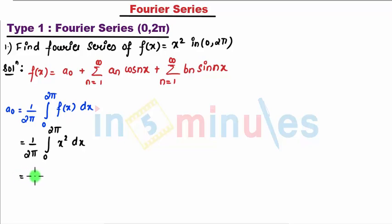So integrating that gets to be x³ by 3, my upper limit is 2π, lower limit is 0, which comes to be 1 upon 2π, 1 upon 3, and 8π³ where I can cancel it out and it comes finally pi here becomes square and I can also cancel here 2 into 4.